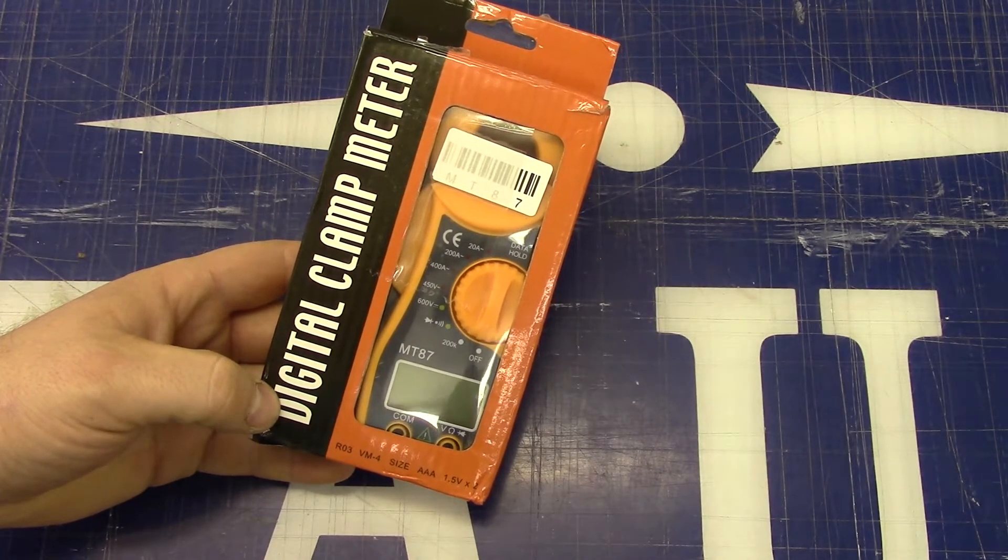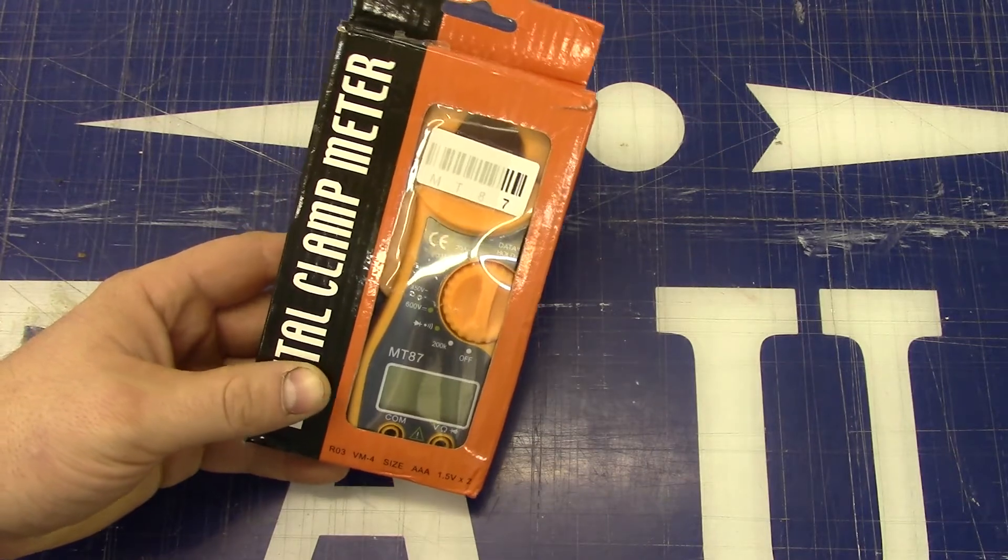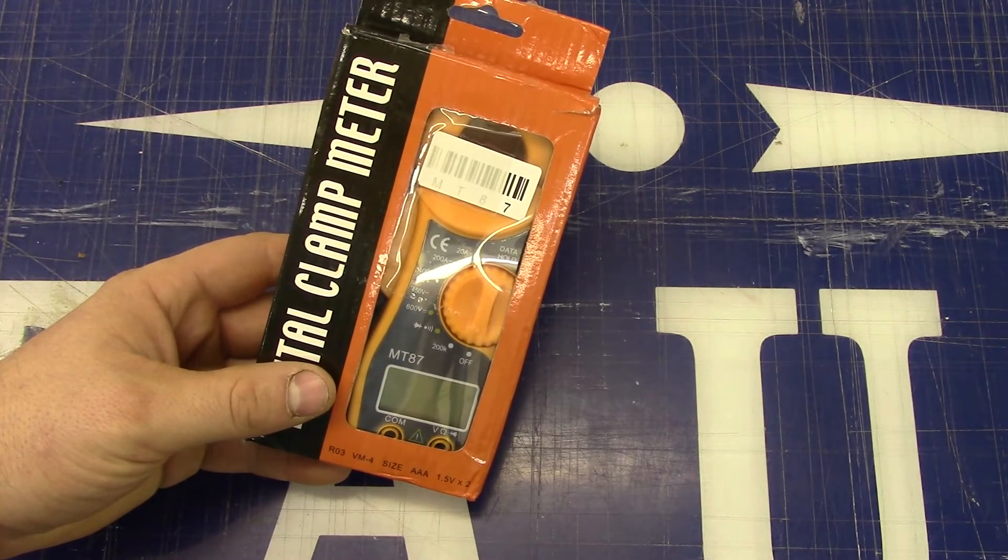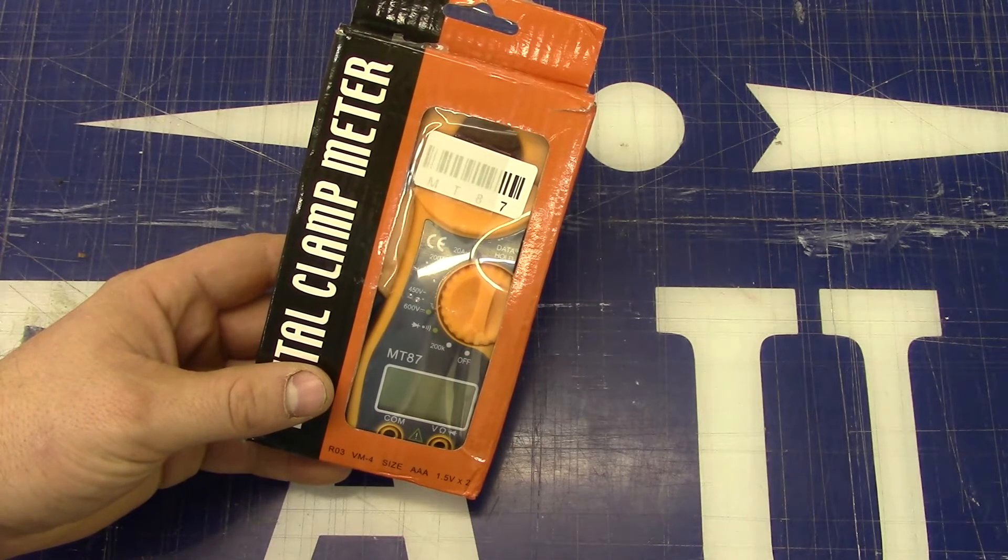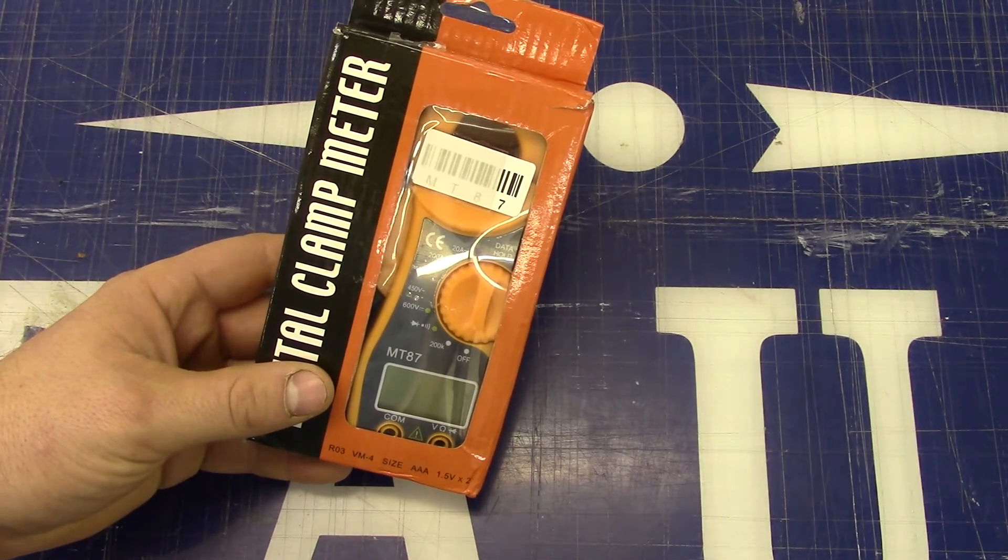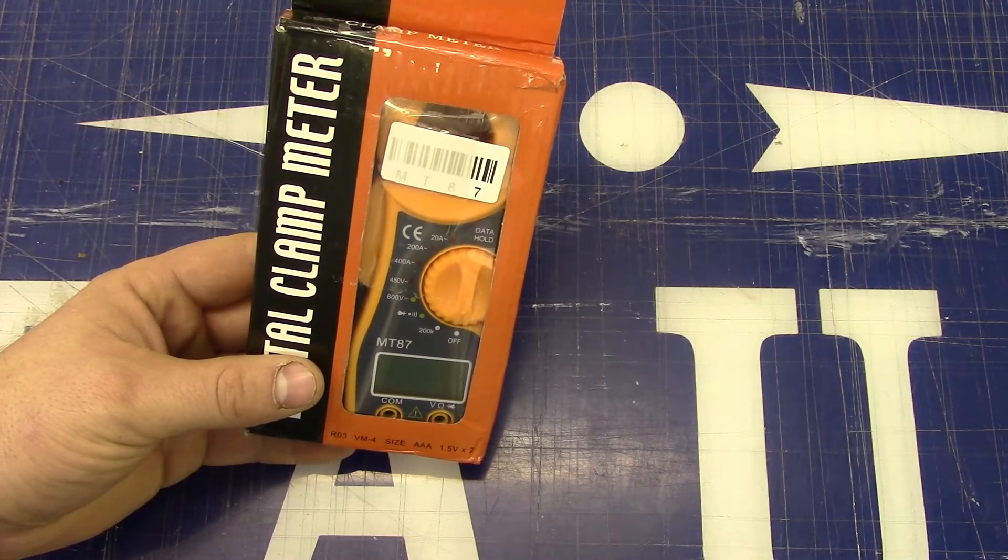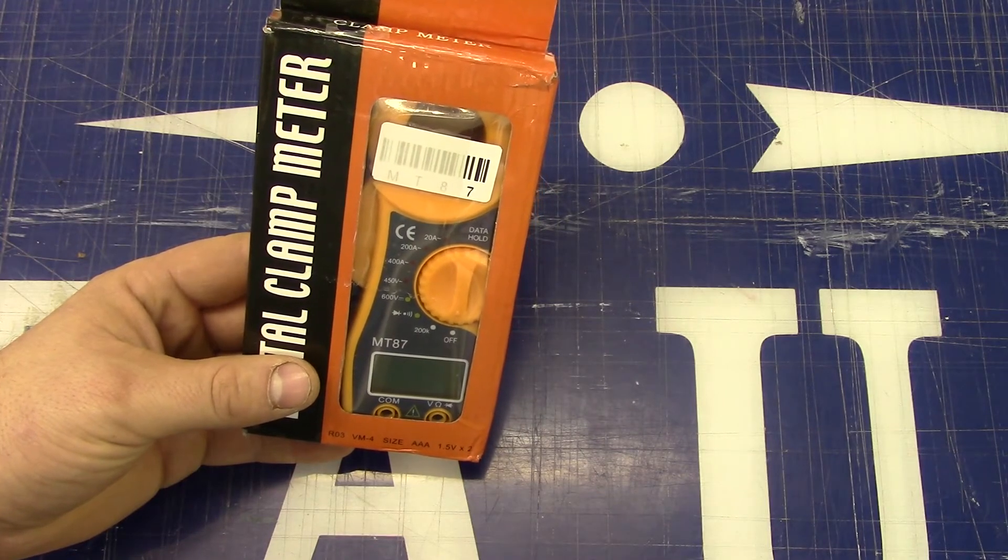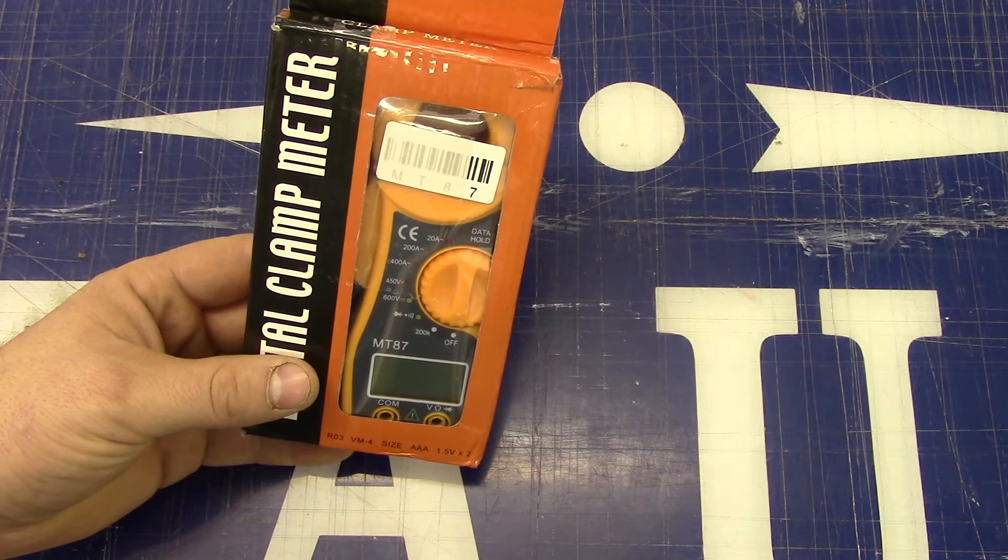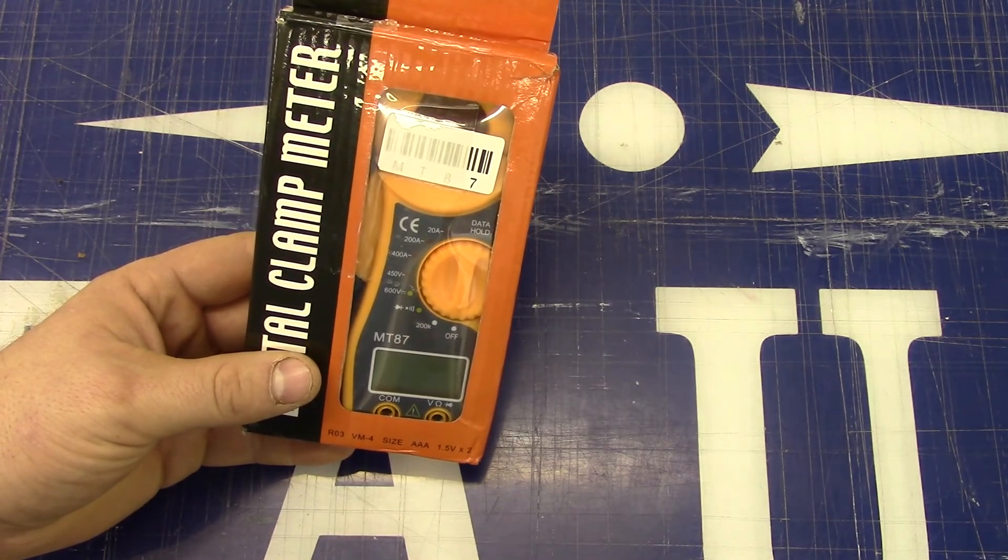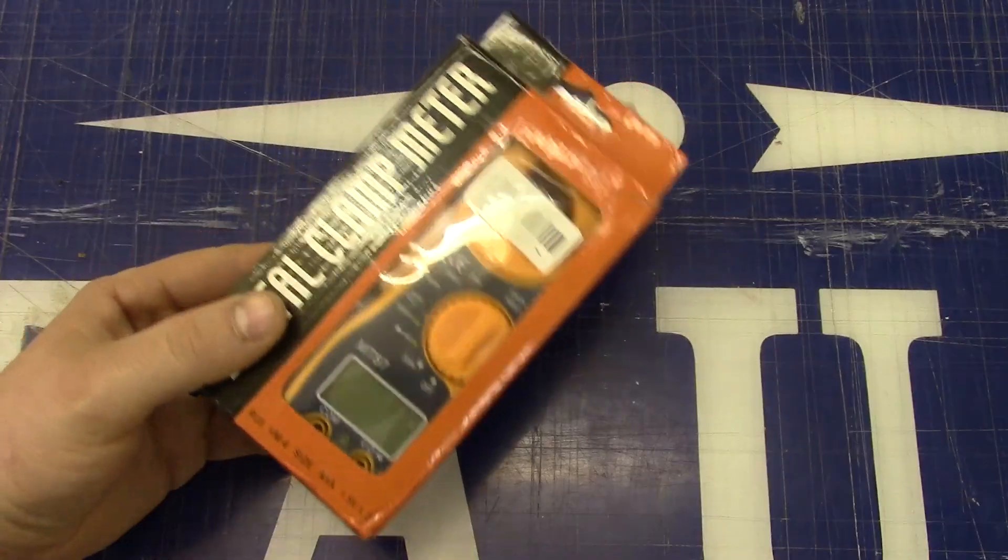Seeing as how it uses a current transformer, just in case you don't already know, that means it only works with AC current. It's not a hall-based sensor, which some of the more expensive amp clamps have and will measure DC current. This one won't. It only works with AC. The voltage doesn't matter. It's a current transformer. It needs an alternating current. But voltage isn't important. Just the current running through the wire. Until next time.